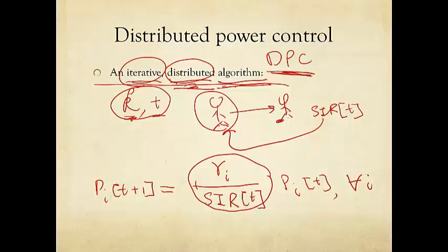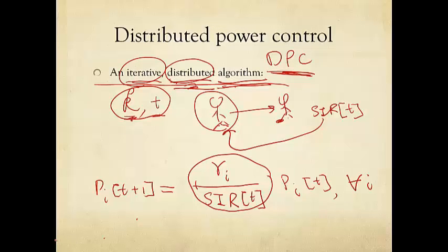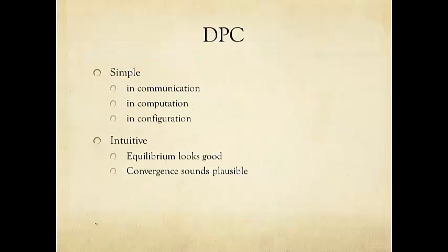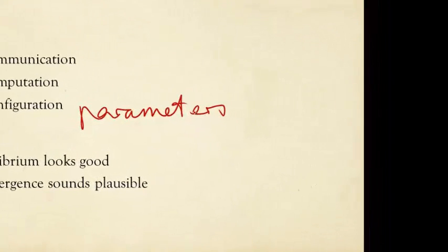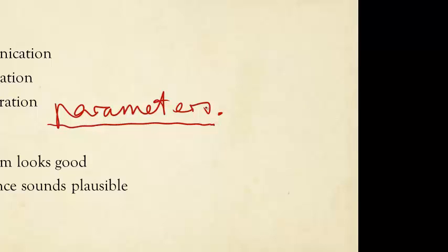Wow, that's pretty simple. Well, it's actually very simple. How simple is it? Let's take a look. It's simple first in communication. You don't need to know anything about the network except your own target SIR, which presumably you know. It doesn't even vary over time. And the current SIR that your intended receiver is getting. That's all you need to know. Second, this is very simple in computation. There's only one multiplication or division. And then it's very simple in configuration. What do you mean by configuration? A lot of times in an algorithm, I have a lot of parameters.